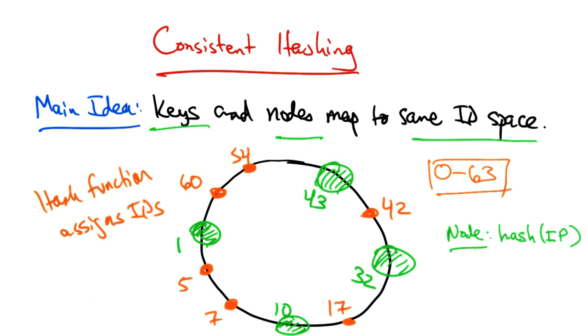In the case of nodes, the ID might be a hash of the IP address. In the case of keys, the ID might simply be the hash of a key. Both of these hash operations create IDs that are uniformly distributed in the ID space.